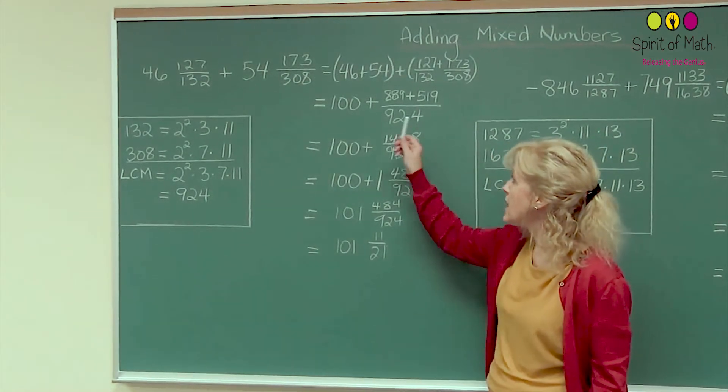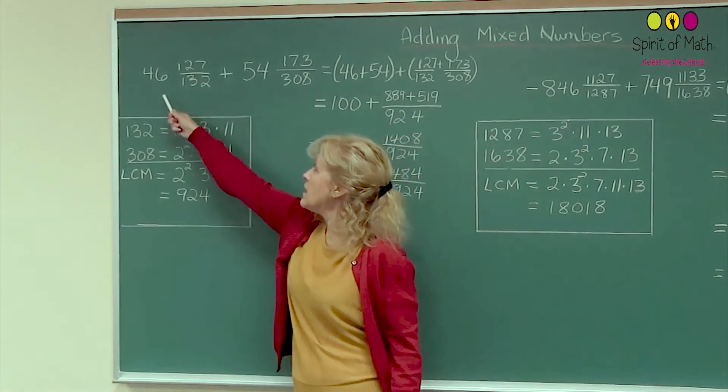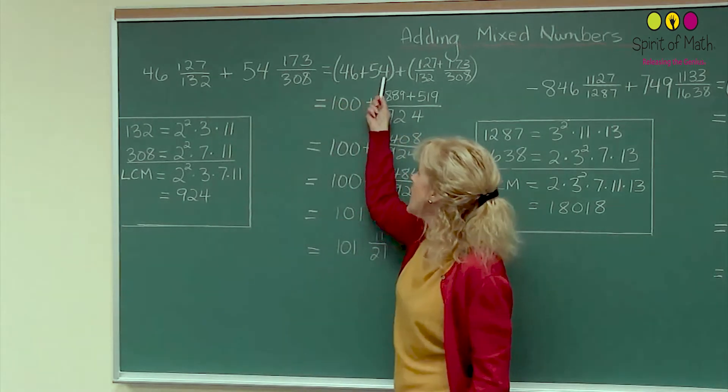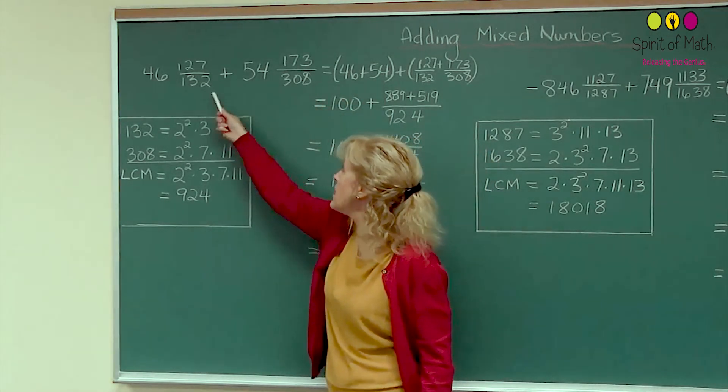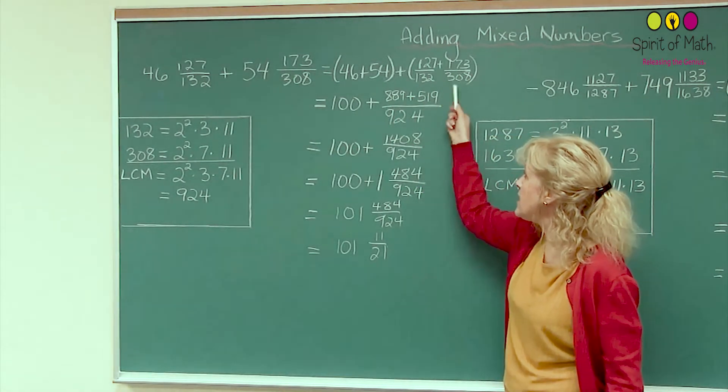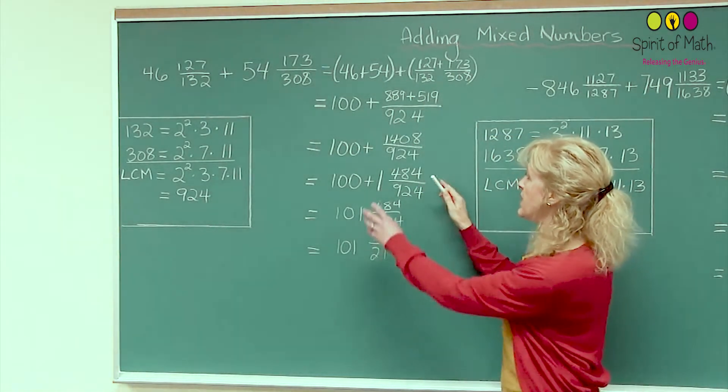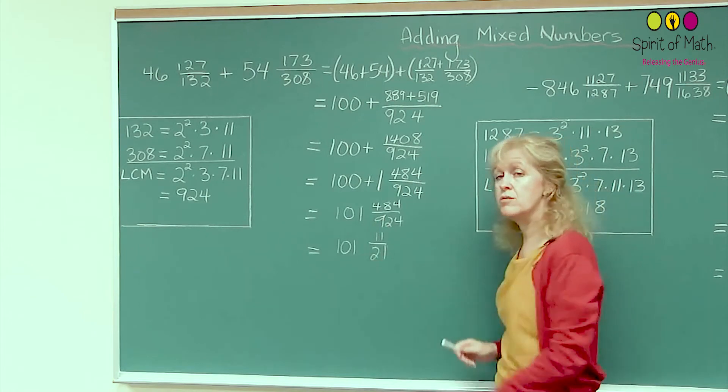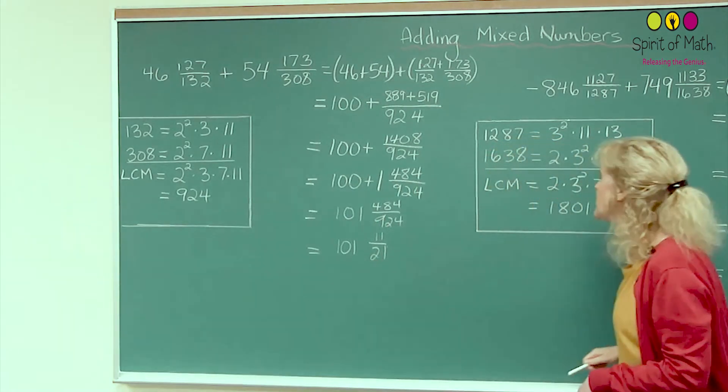Alright? So, again, the steps are take the integer parts, add them together, separate that from the other fractional parts. You add those together, you add these together, then you basically put them together and you reduce. Okay? Let's look at the next one.